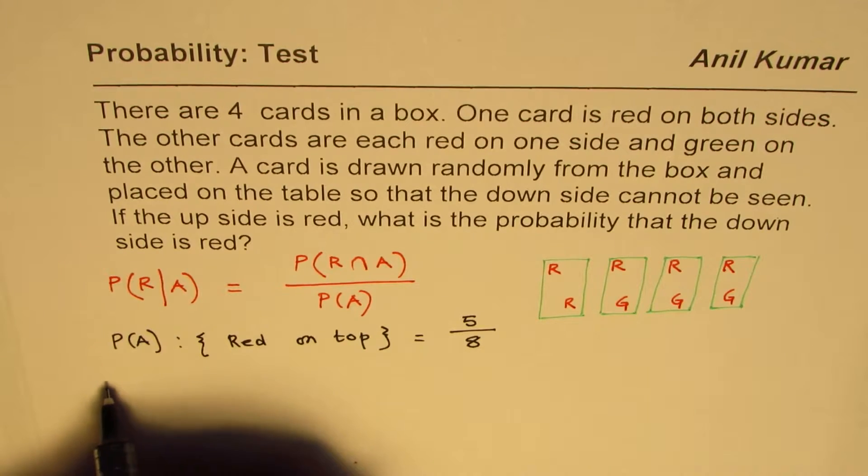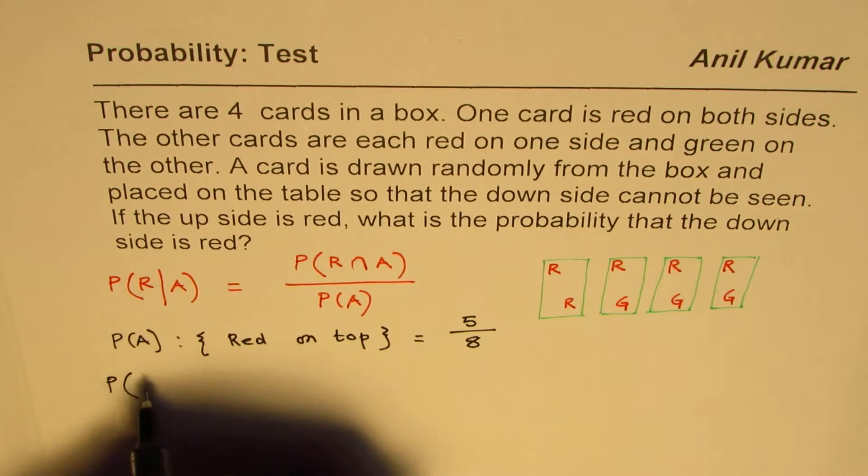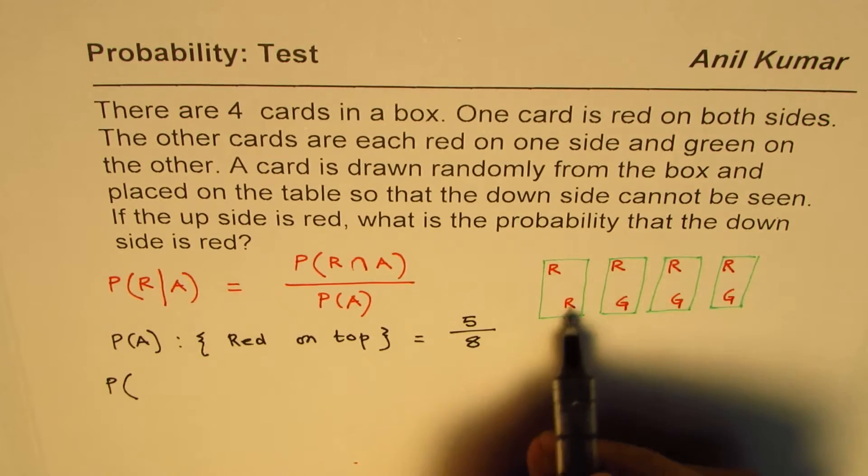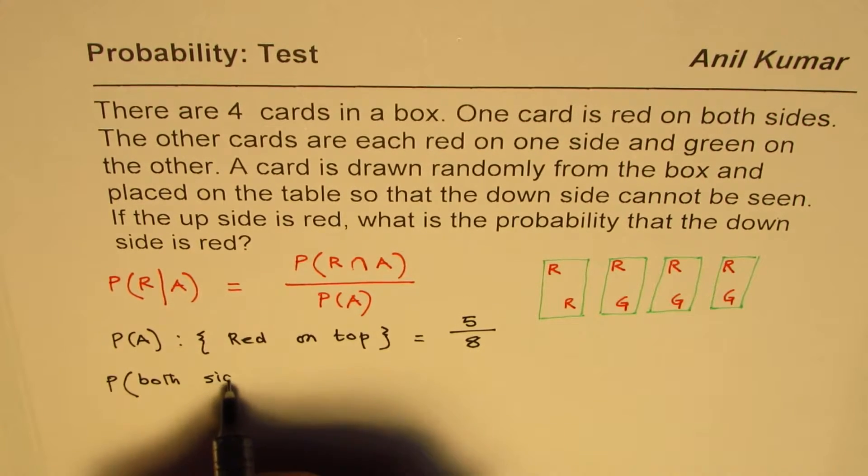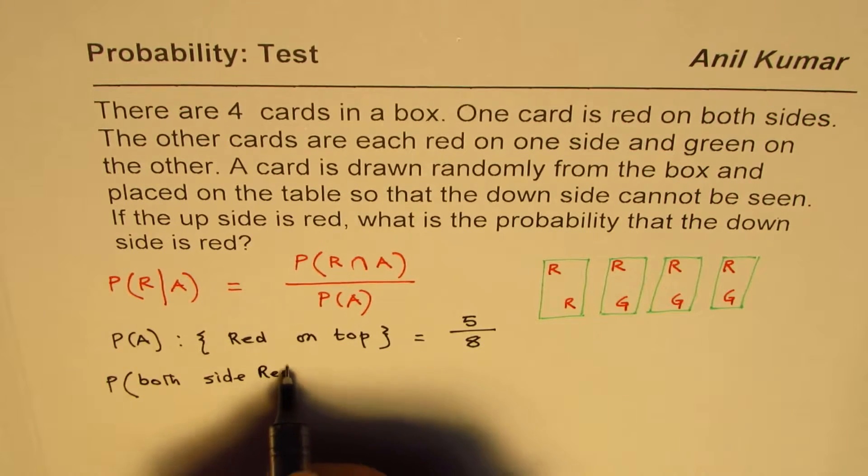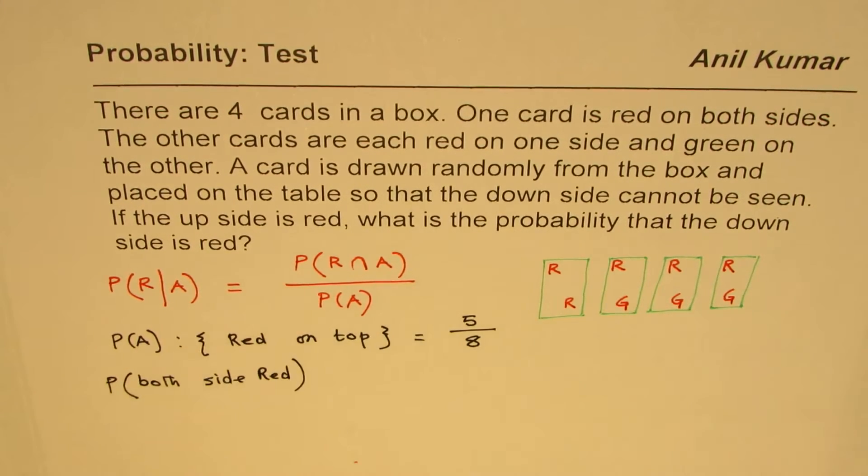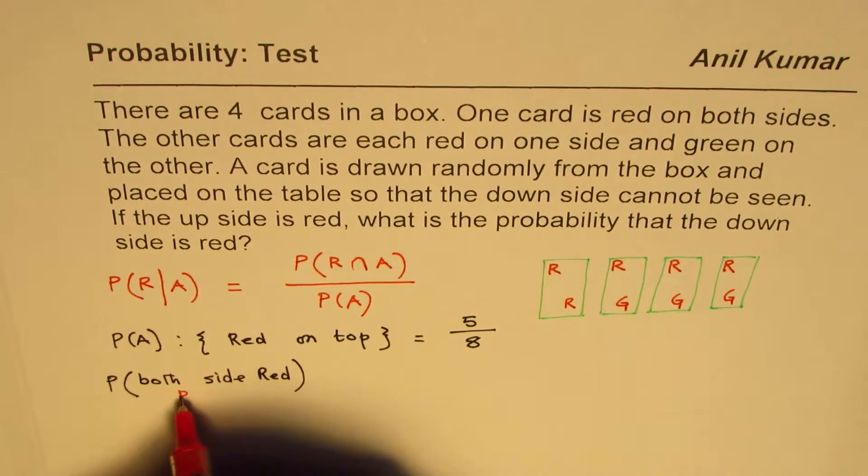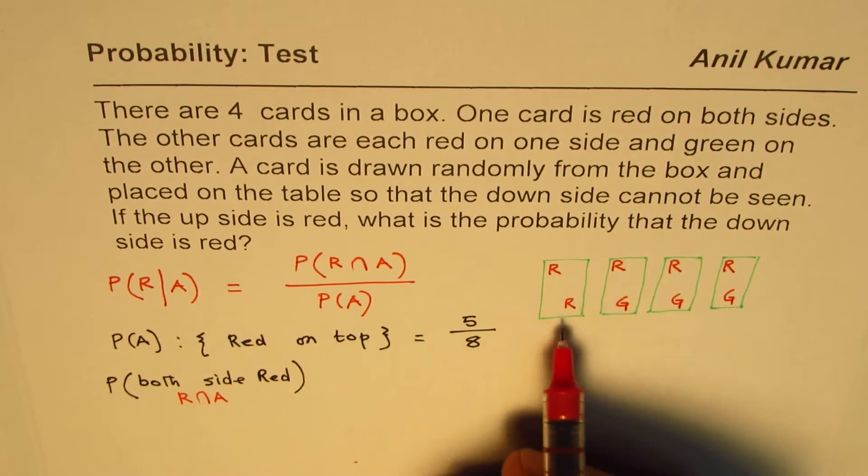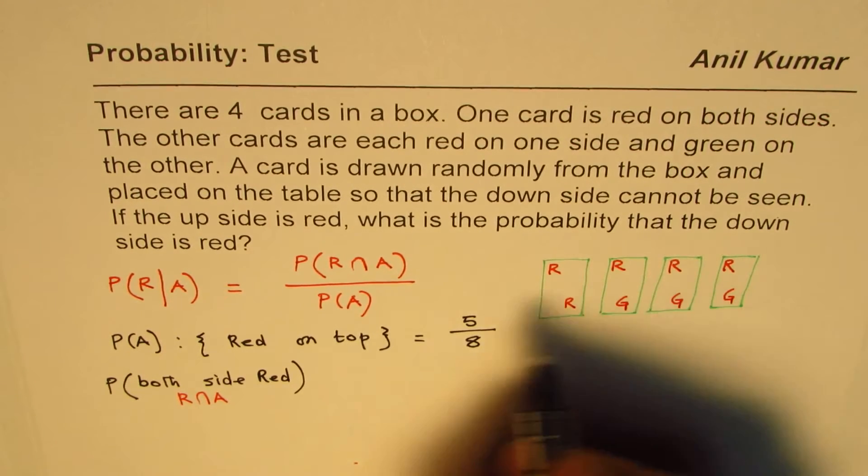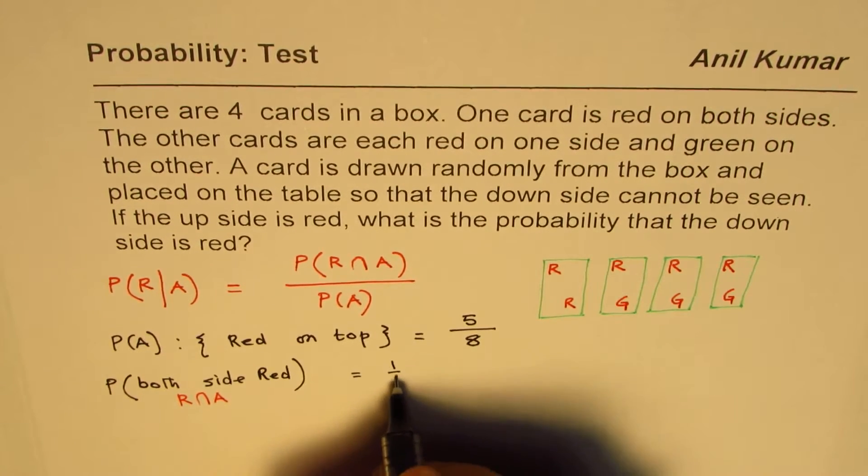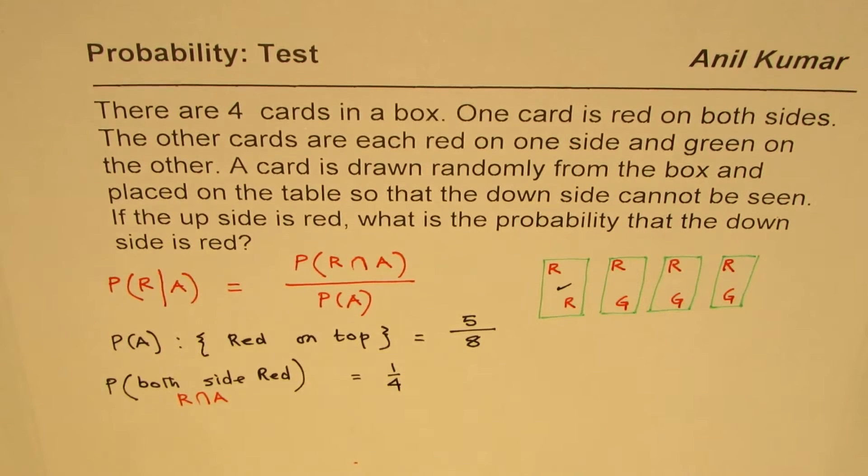And now what is the probability of both side red? This is what we are calling intersection. That is our intersection A. So red on both the sides. Clearly, in this case, it is one out of four cards. Only one card is both sides red.